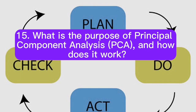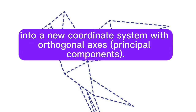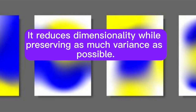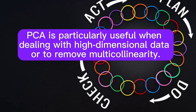Question 15: What is the purpose of principal component analysis (PCA), and how does it work? Answer: PCA is a dimensionality reduction technique used to transform data into a new coordinate system with orthogonal axes (principal components). It reduces dimensionality while preserving as much variance as possible. PCA is particularly useful when dealing with high-dimensional data or to remove multicollinearity.